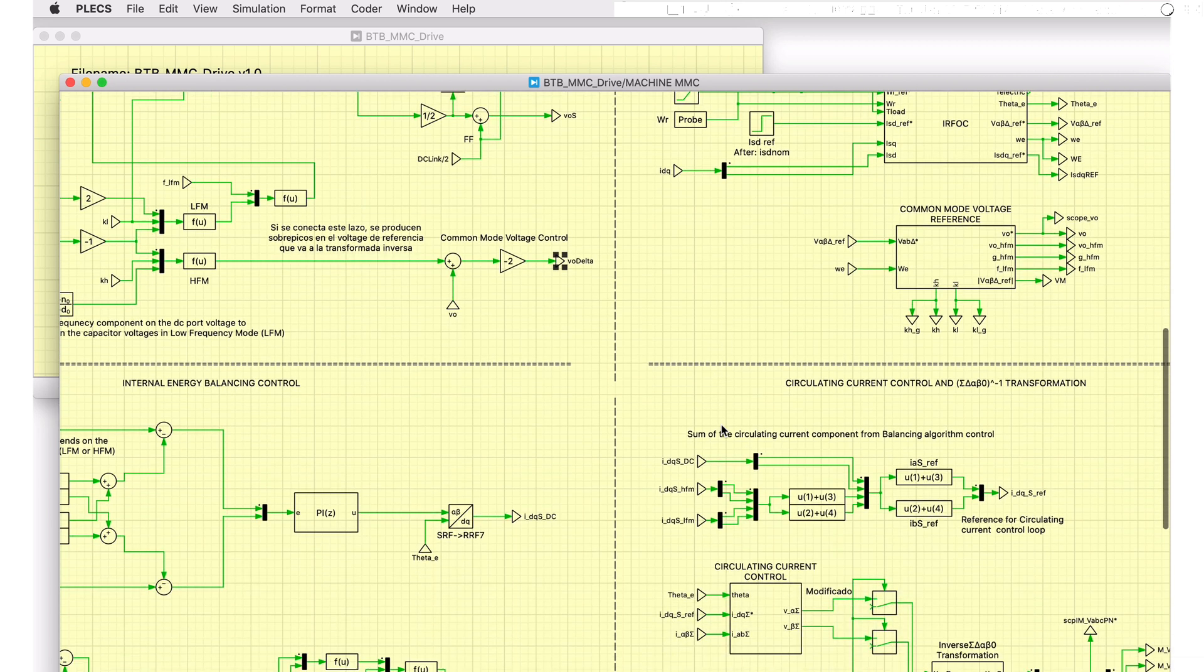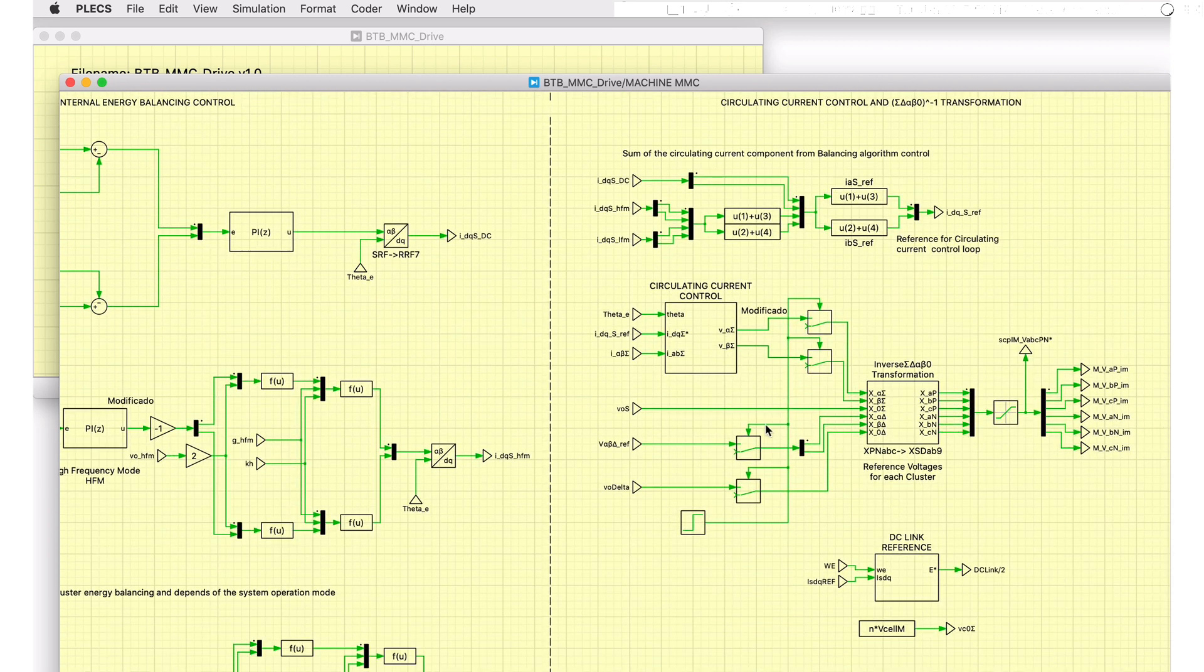Similar to the grid-side MMC, the outputs from the controllers, after an inverse transformation, provide the cluster voltage reference value, which is then used for cell balancing.